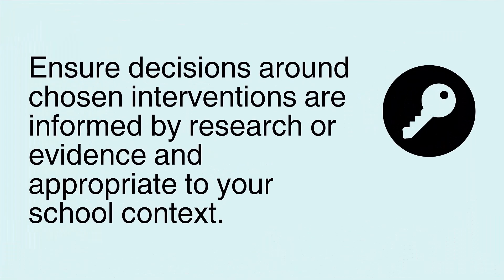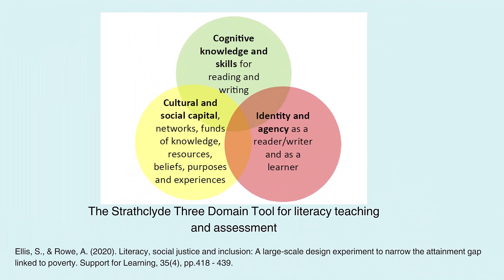Ensure decisions around chosen interventions are informed by research or evidence and appropriate to your school context. We know that interventions are more likely to be successful where they are based on a strong research or evidence base, as well as being appropriate to the school context and the individual child. Knowing and understanding children and their reading profiles is important in choosing effective targeted interventions. The Strathclyde three-domain model offers three lenses which allow educators to reflect on literacy teaching and assessment and consider a child's reading profile. All domains are important because research shows that all three are highly impactful on literacy learning. Educators are encouraged to reflect on a child's cognitive skills and knowledge — such as decoding and fluency — alongside their cultural and social capital, and their reading identity and motivation.